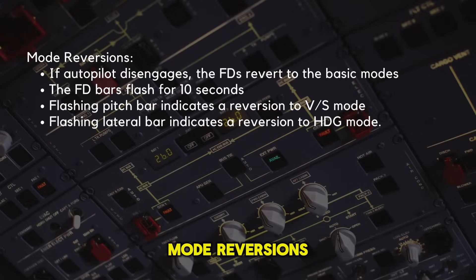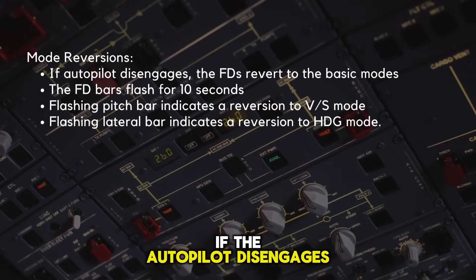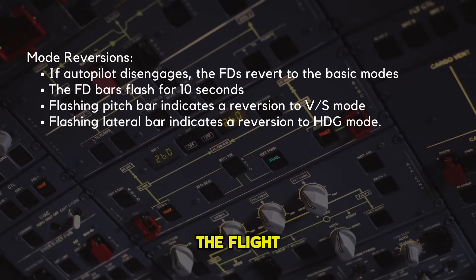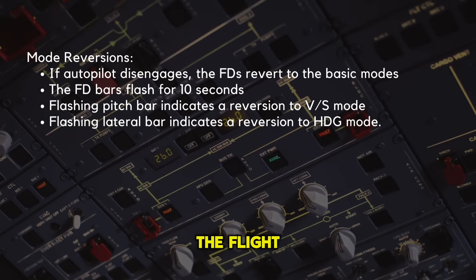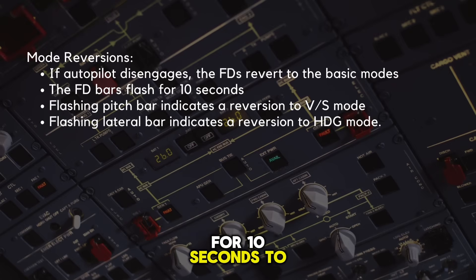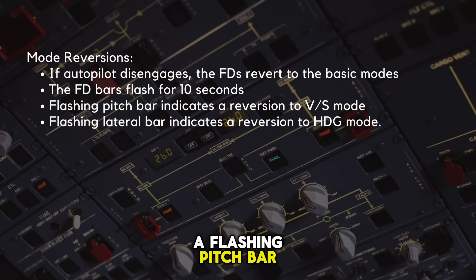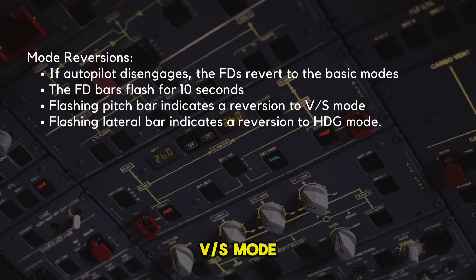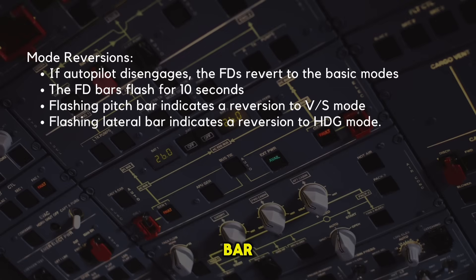Regarding mode reversions: if the autopilot disengages, the flight directors revert to the basic modes, and the flight director bars flash for 10 seconds to alert you. A flashing pitch bar indicates a reversion to vertical speed mode, while a flashing lateral bar indicates a reversion to heading mode.